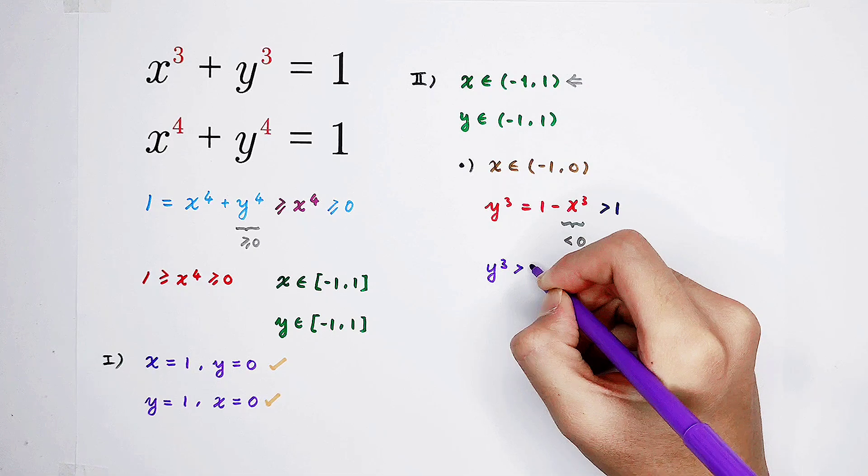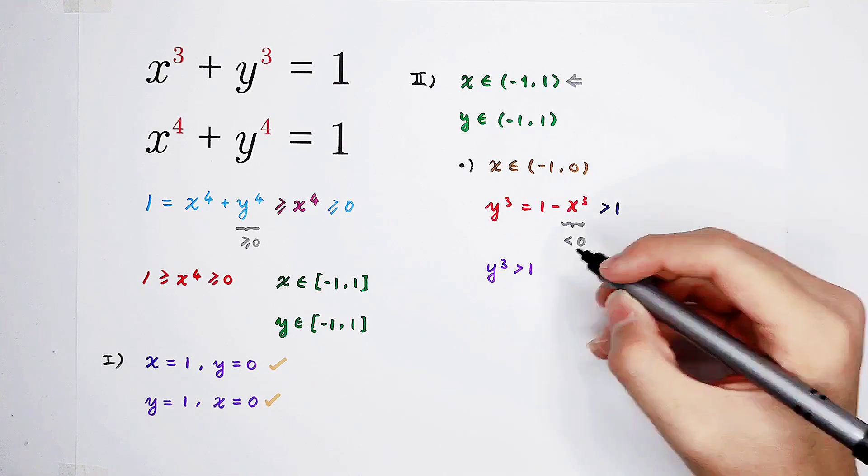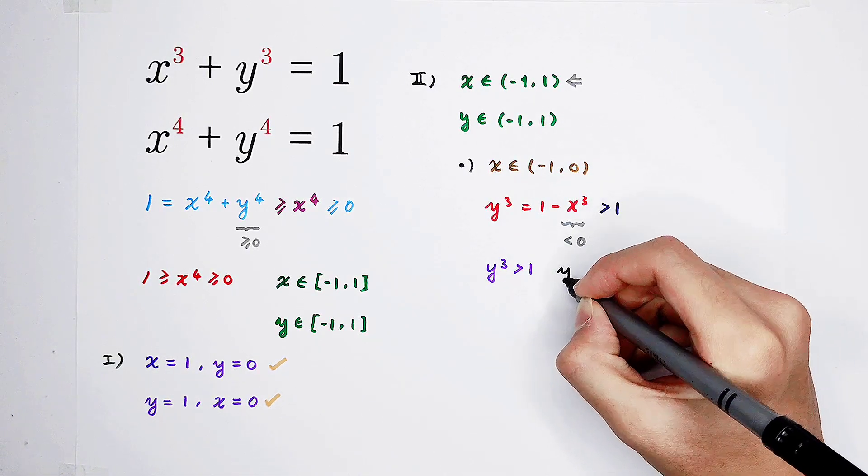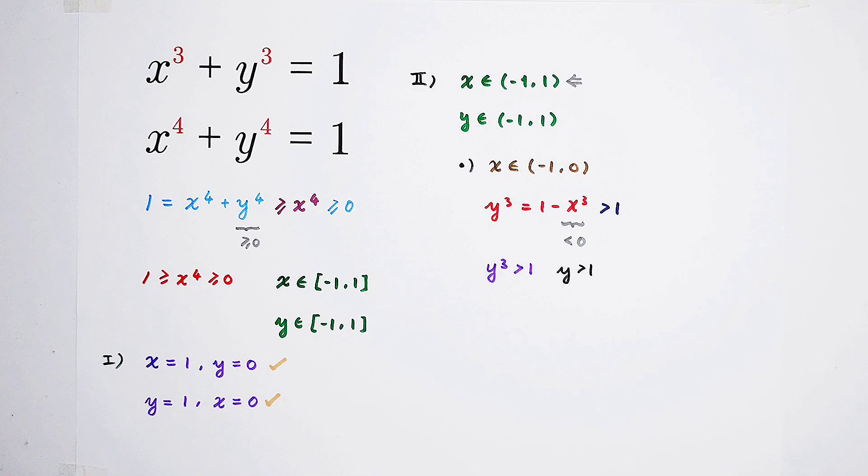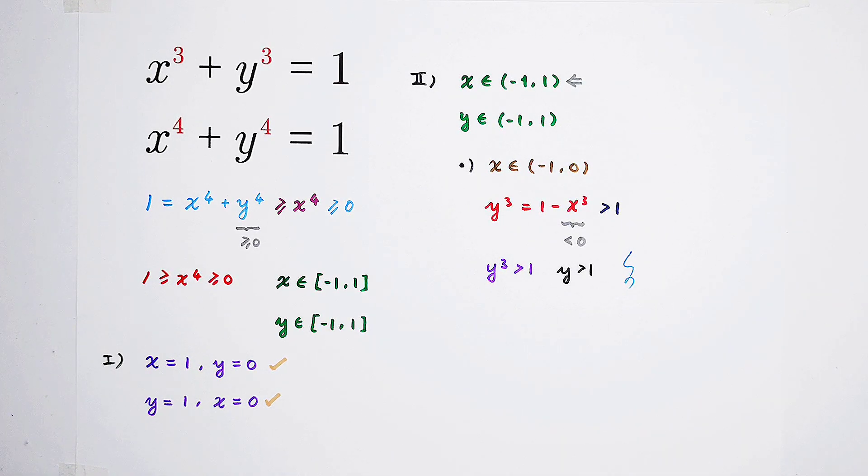Okay, that means y is bigger than 1. Wait a moment, a contradictory. Again, nothing, only a contradictory.